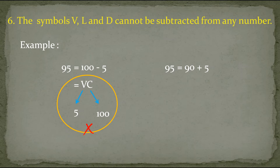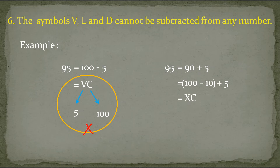Instead, to write 95 we split it as 90 plus 5, and 90 is split further as 100 minus 10 plus 5. Since we are subtracting 10 from 100, we write X to the left of C giving XC, then we add 5 by writing V to the right of C. So 95 is written as XCV — X gives 10, C is 100, V is 5, and writing V to the right of the higher value adds it. This method is correct.